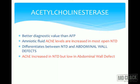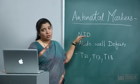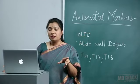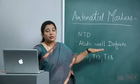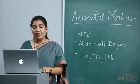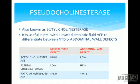Acetylcholinesterase has better diagnostic value than AFP. Amniotic fluid acetylcholinesterase levels are increased in most open neural tube defects. It differentiates between neural tube defects and abdominal wall defects because AFP is raised in both. Acetylcholinesterase levels are increased in neural tube defect and decreased in abdominal wall defect. Pseudocholinesterase (butylcholinesterase) is also useful: it is low in neural tube defect and high in abdominal wall defect — the inverse of acetylcholinesterase.